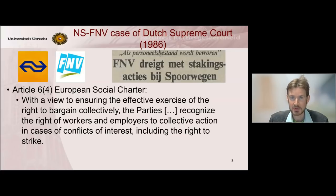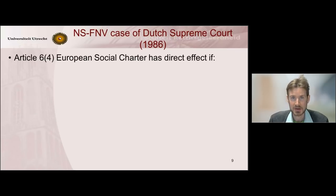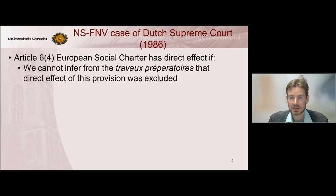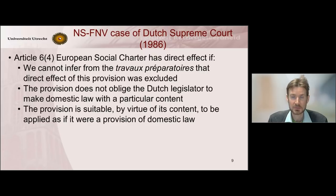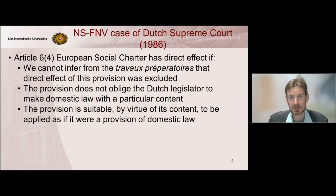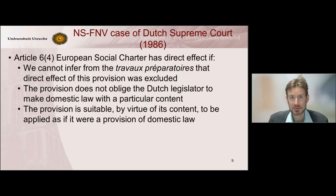The Dutch Supreme Court said this was possible provided three conditions were met. First, Article 6 has direct effect if we cannot infer from the travaux préparatoires that direct effect of this provision was excluded. Second, the provision does not oblige the Dutch legislator to make domestic law with a particular content. And third, the provision is suitable by virtue of its content to be applied as if it were a provision of domestic law. In the case, these three conditions were indeed met, so the Trade Union Confederation could invoke Article 6, paragraph 4 of the European Social Charter and they could go on strike.